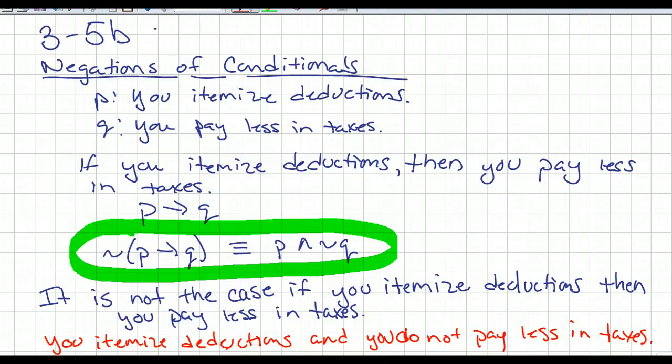And I want to first look at negations of conditional statements. So we're going to take two statements here. First of all, P: you itemize deductions, and Q: you pay less in taxes. So if I put this in a conditional statement, it is if you itemize deductions, then you pay less in taxes.